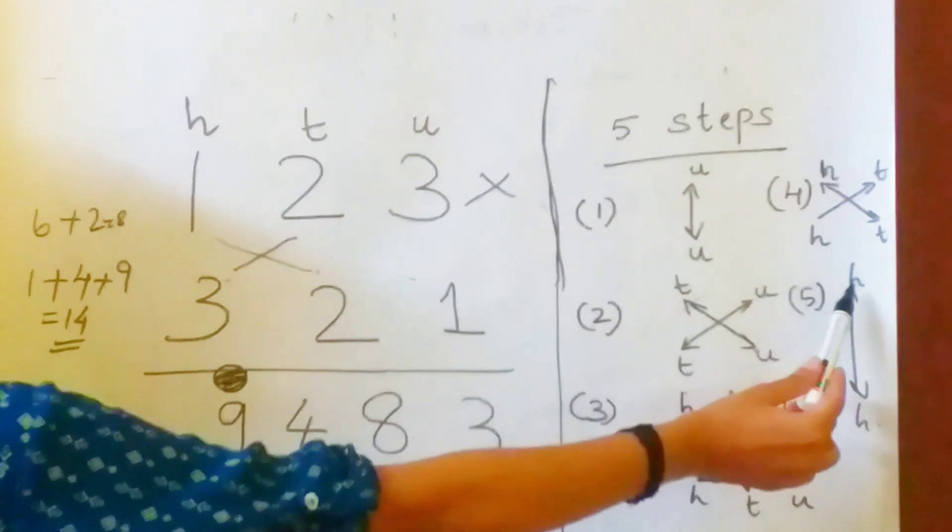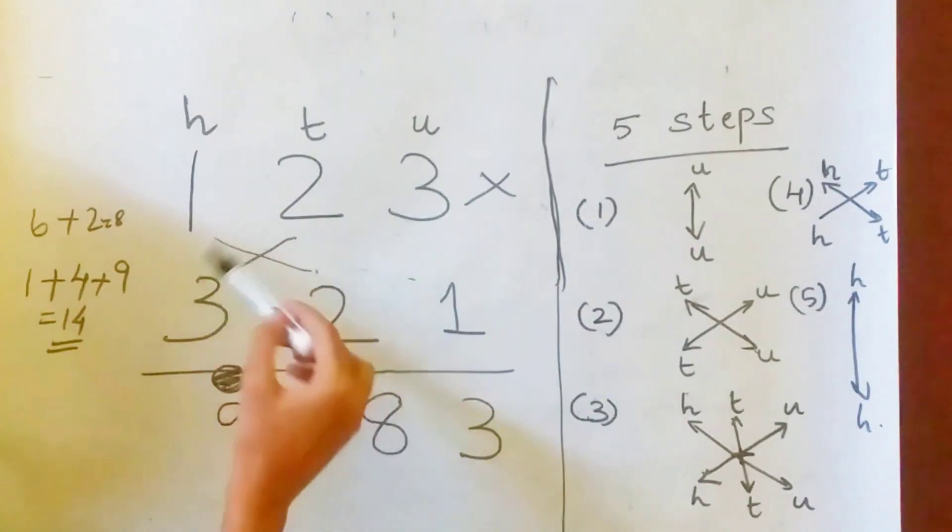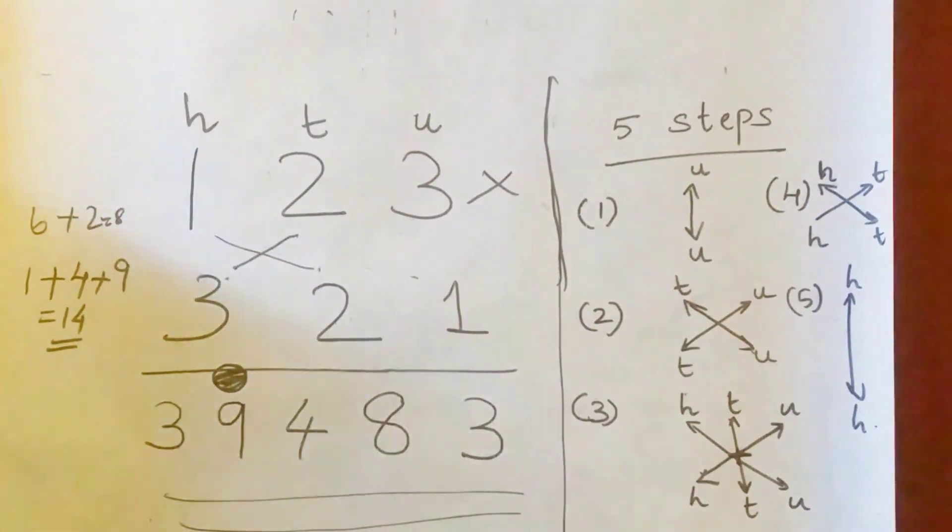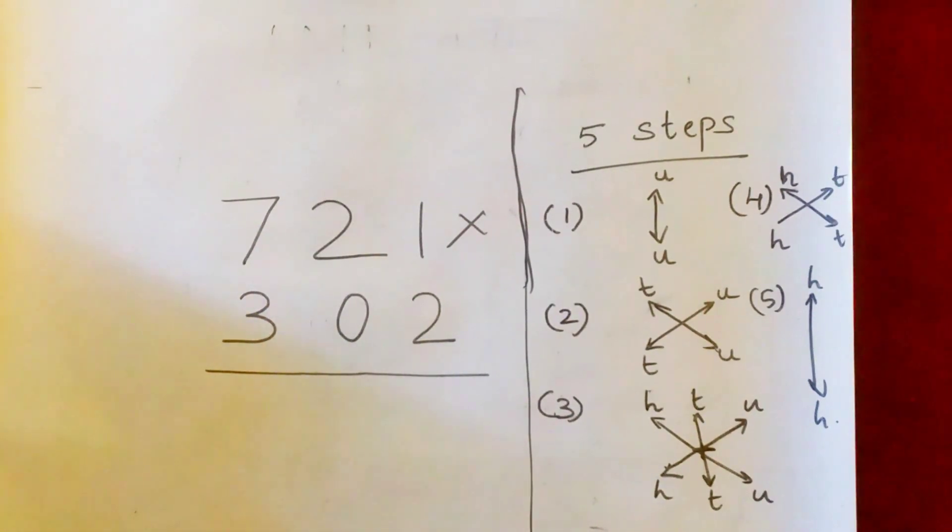The last step is to multiply the hundreds place. 1 into 3, 3. This is the answer. Now let's move to another tougher example. See, first step. What is the procedure?